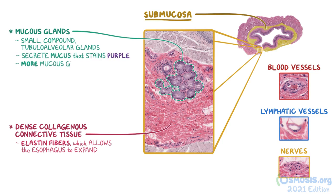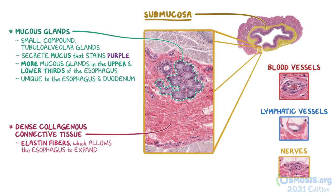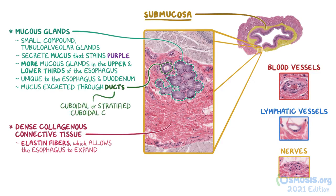There are typically more mucous glands present in the upper and lower thirds of the esophagus. The location of mucous glands within the submucosal layer is actually a unique feature specific to both the esophagus and the duodenum. The mucus is excreted through ducts that reach the mucosa's epithelium in order to help lubricate the surface. These ducts typically have cuboidal or stratified cuboidal cells.